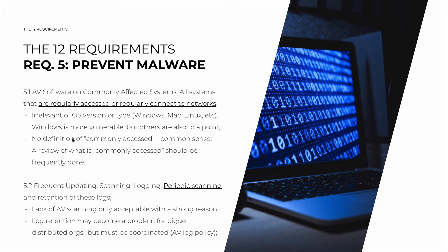The definition of what's commonly accessed is not a specific one — just use common sense. For example, if you have an isolated machine in a locked server room, that's not commonly accessed. But what about a machine that connects to the internet, even with a firewall, once a month or once per quarter? It can be considered or not. The requirement here is not very strict — as with many other criteria, just have a reason for what you selected. It's important that a review of what is commonly accessed be done frequently, because vulnerabilities change, technology changes, and your own devices change. A machine that is commonly accessed today may not be three months from now, or vice versa.